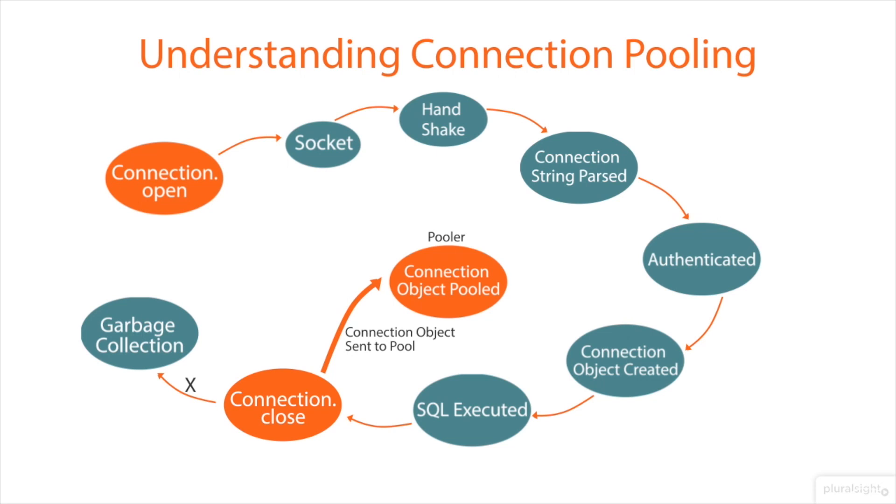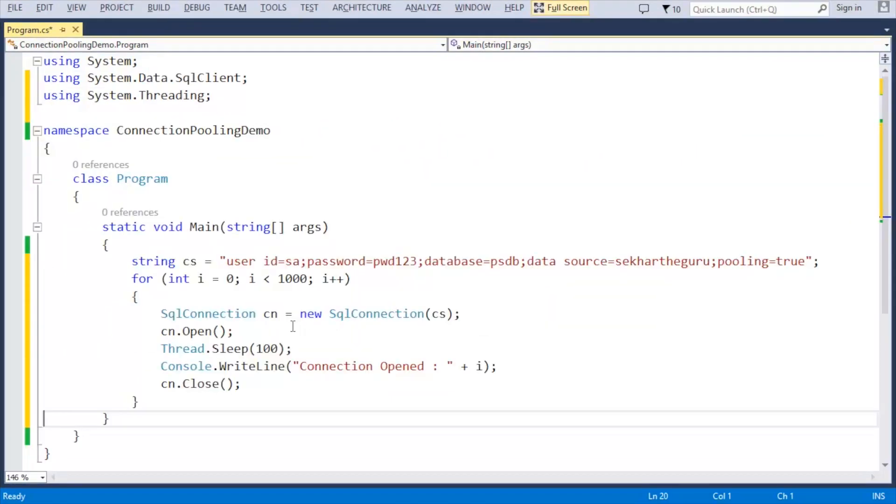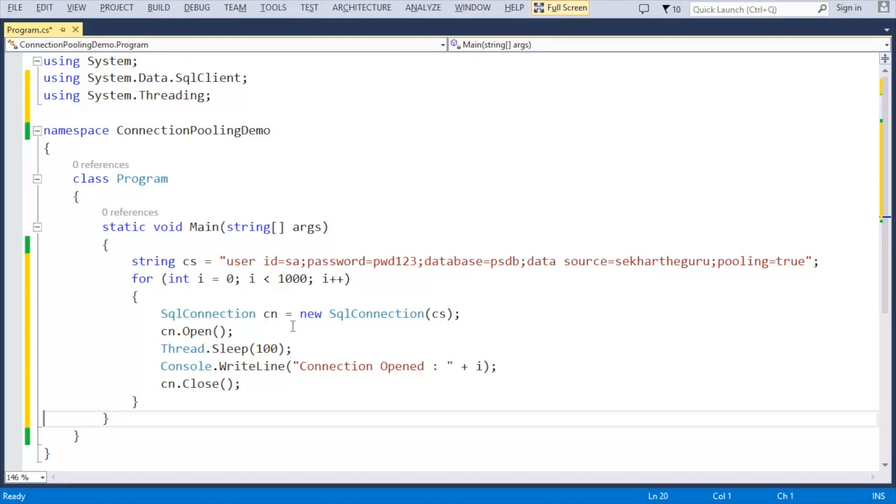Now let us understand connection pooling in practice with the support of a console application. Let us write the code. I have defined a variable for holding the connection string. To understand the connection pooling in detail, I have taken a for loop which will iterate for 1000 times.